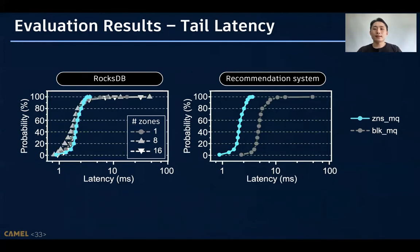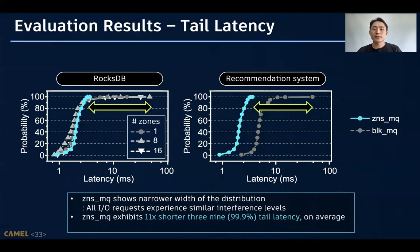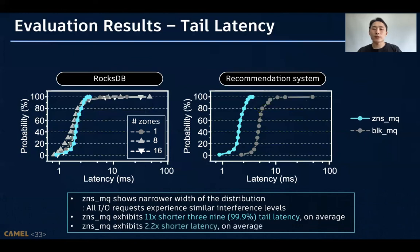And if you see the tail latency results, we can find that ZNS-MQ shows narrower spread of the distribution. It means that our ZNS-MQ makes IO requests experience similar interference levels. So, ZNS-MQ shows 11 times better P99 tail latency compared to the BLK-MQ. And we also found that our ZNS-MQ exhibits about two times shorter latency than BLK-MQ on average.